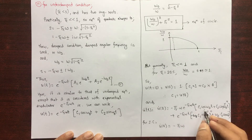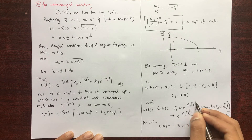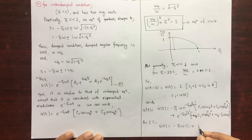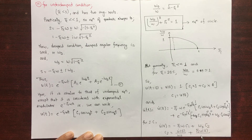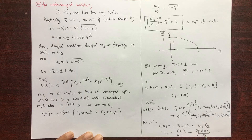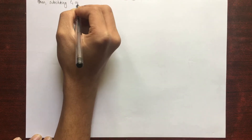At t = 0, the sine terms vanish, the exponential terms equal 1, so: u̇(0) = −ξω·C₁ + ω_d·C₂. Since we have C₁, we solve for C₂: C₂ = [u̇(0) + ξω·u(0)] / ω_d, which simplifies using √(1 − ξ²). So we have obtained the values for both C₁ and C₂.